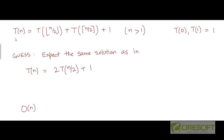Let's try to solve this recurrence using the substitution method. The recurrence we are given is T(n) = T(floor(n/2)) + T(ceiling(n/2)) + 1, when n is greater than 1. The base case is that for n equal to 0 and 1, the value of T is 1, so T(0) and T(1) are both 1.